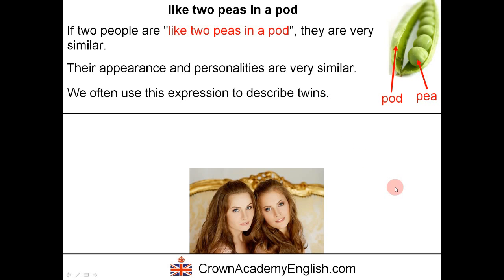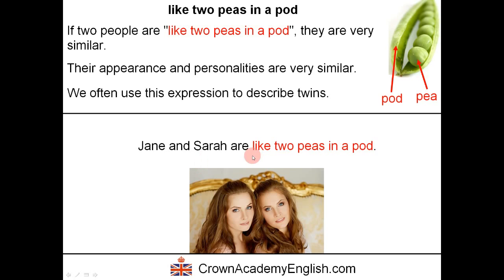For example: 'Jane and Sarah are like two peas in a pod' — because their appearance is very similar, and probably their personalities are very similar also.